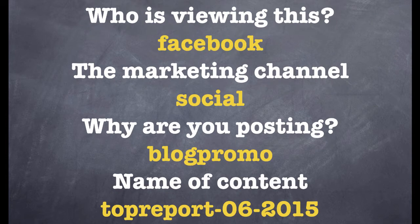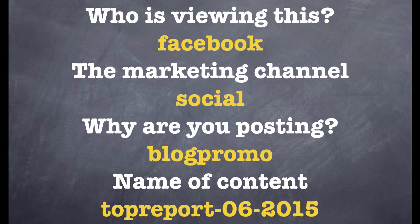Here are my answers. I'm promoting this to Facebook, so the list of who is viewing this are my Facebook followers. This is social media, so I'm calling it 'social' — it's not a promoted social post, it's not sent out through email. Why am I posting? The overall campaign objective is blog promotion. The piece of content references the blog post title and the month and year I'm posting this. Notice that all of these are lowercase — I've chosen to always do lowercase when answering these questions, and I'll show you why by the end of this video.